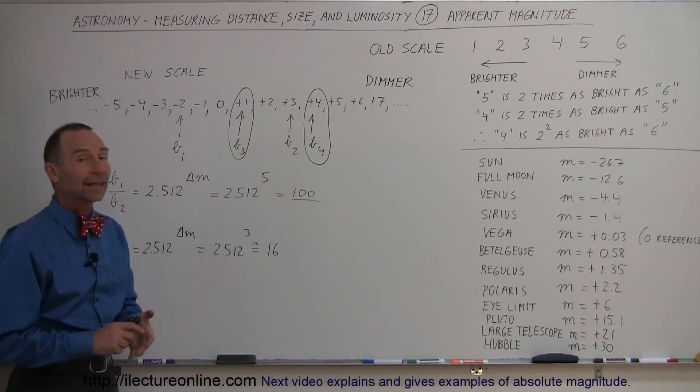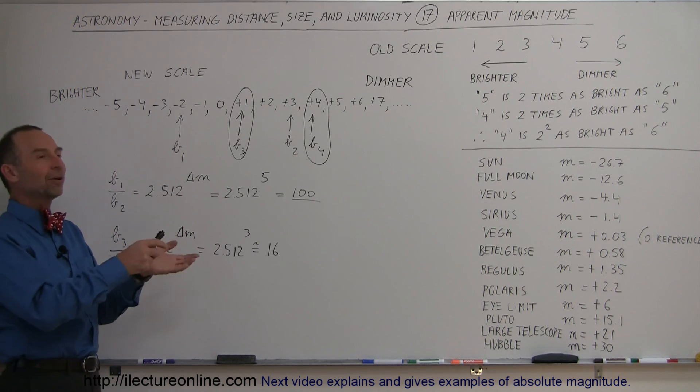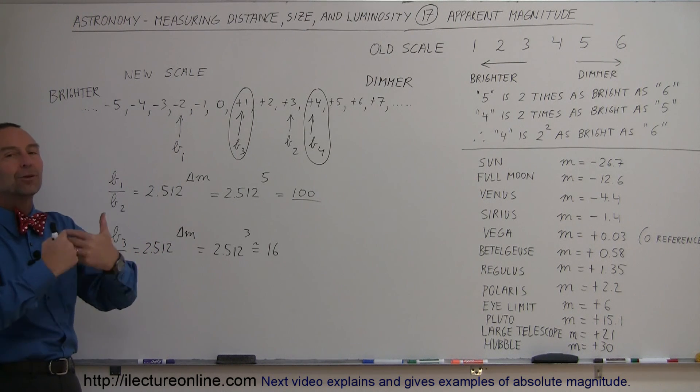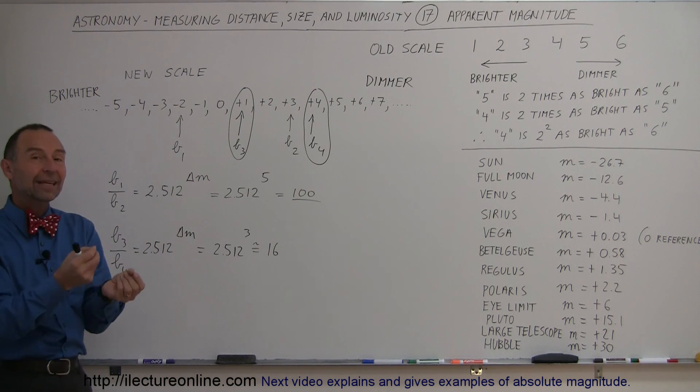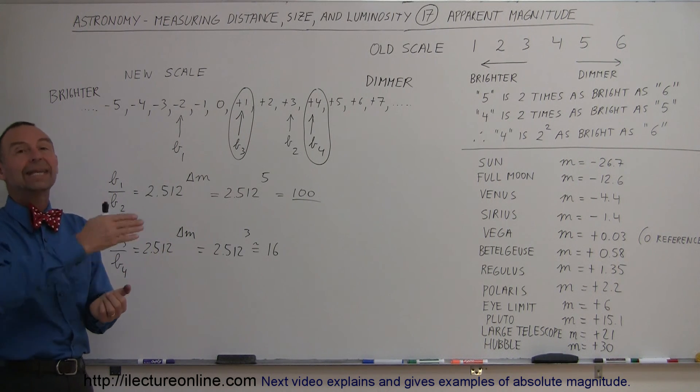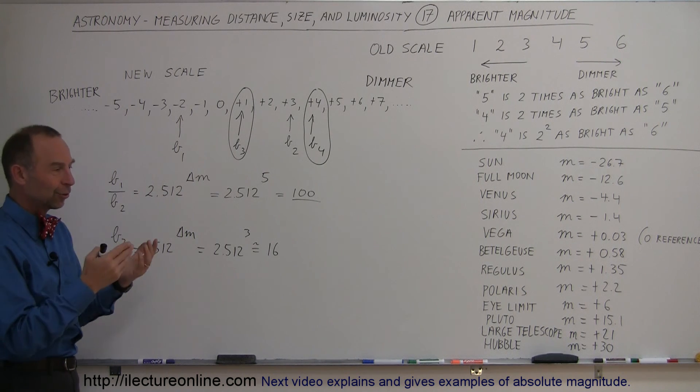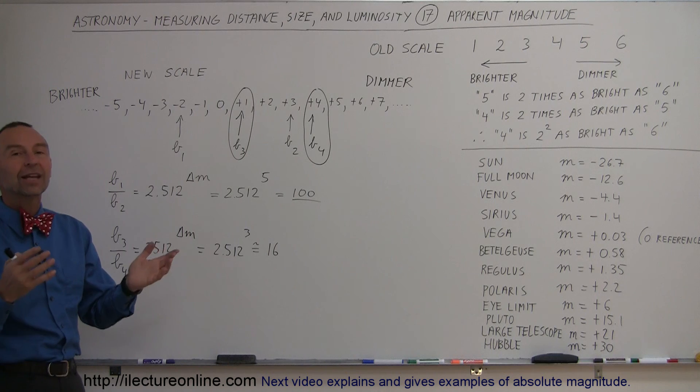That gives you kind of a feel of how we use the magnitude scale. This is, of course, the apparent magnitude scale. And then, on the next video, we'll look at the absolute magnitude scale, and we'll compare the two. Then finally, we'll know this and know how we use these scales and the techniques we've learned to find the distance to anything in the universe. That's the key to understanding how we determine the distance to stars, galaxies, and anywhere else, anything else in the universe.